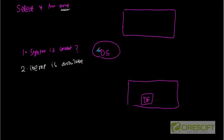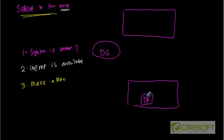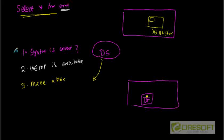Once the dedicated server gets all this metadata information, it is going to make a plan — how to execute this query, that means how to get the data from the data file and put it in the database buffer cache. The block is going to come and stay there, and after that the dedicated server is going to give you the result of this query. These three steps together are called parsing — the parsing of your SQL statement.